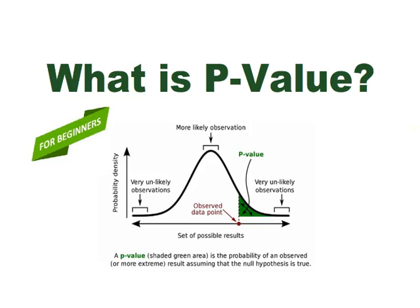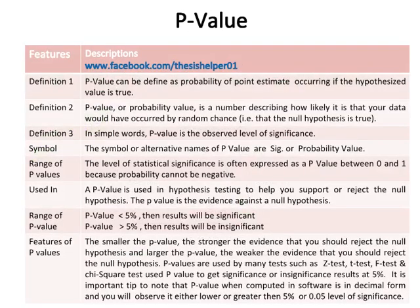What is p-value? The first definition of p-value can be defined as the probability of a point estimate occurring if the hypothesized value is true. The second definition of p-value, or probability value, is a number describing how likely it is that your data would have occurred by random chance, such that the null hypothesis is true. In simple words, p-value is the observed level of significance.